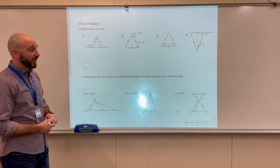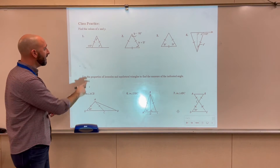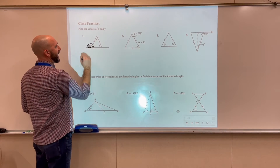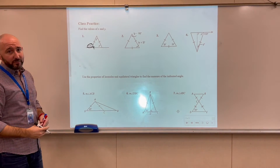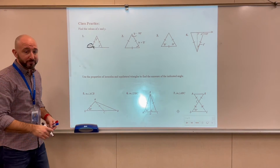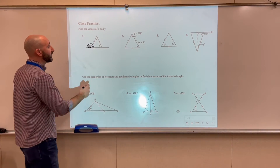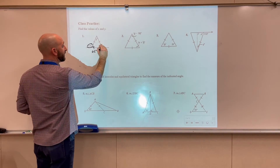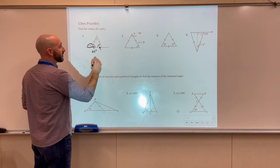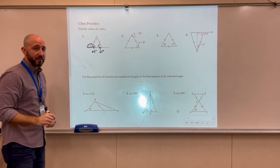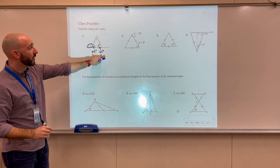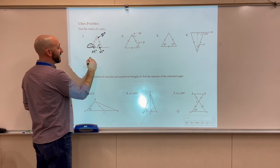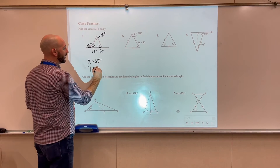Find the values of x and y. For the first problem, the numerical value given is 115 degrees. The angle adjacent to that forms a linear pair, so those two angles sum to 180 degrees: 180 minus 115 equals 65 degrees. Since this is 65 degrees and these are the base angles of an isosceles triangle, x would also have to be 65. Now 65 plus 65 equals 130, and 180 minus 130 gives us y, which equals 50 degrees. So x equals 65 degrees and y equals 50 degrees.